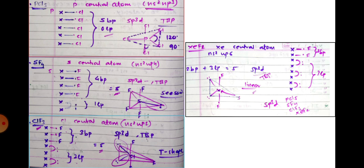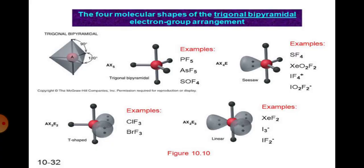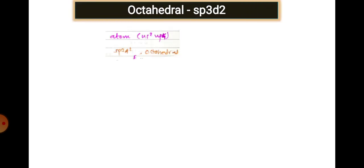Xenon, though a noble gas, can form bonds because of its vacant f-orbitals. These are the four possible combinations for sp3d: five bond pairs (zero lone pairs), four bond pairs (one lone pair), three bond pairs (two lone pairs), and two bond pairs (three lone pairs), giving trigonal bipyramidal, seesaw, T-shaped, and linear structures respectively. Now moving to the octahedral system, sp3d2.